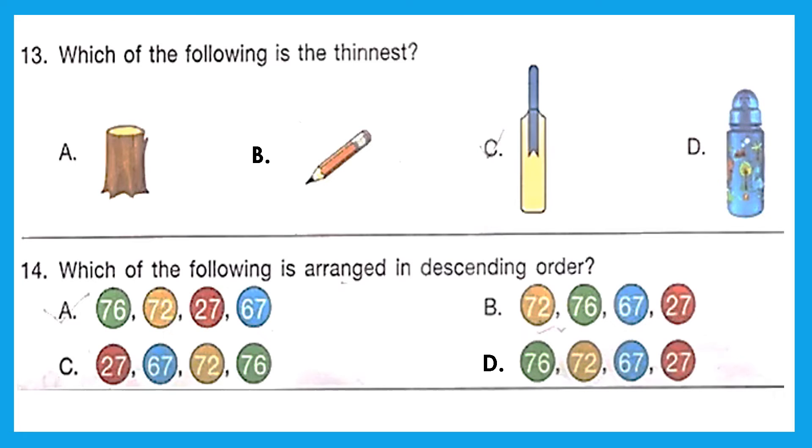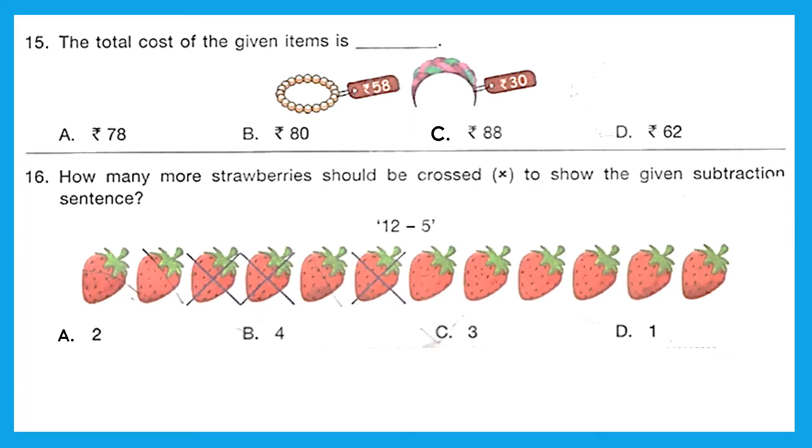Question 13: Which of the following is the thinnest? And that is our option B, pencil. Question 14: Which of the following is arranged in descending order? Descending order means going from largest to smallest. Let's see. A has 76, 72, but then it is 27, and then 67, so it is not correct descending order. Then B: 72, 76—okay, so here itself it goes wrong because the highest one is 76; it should be first in the descending order. Moving to C: 27, 67—again this is not correct. D: 76, 72, 67, and 27. And this is the right descending order. Option D is the right answer.